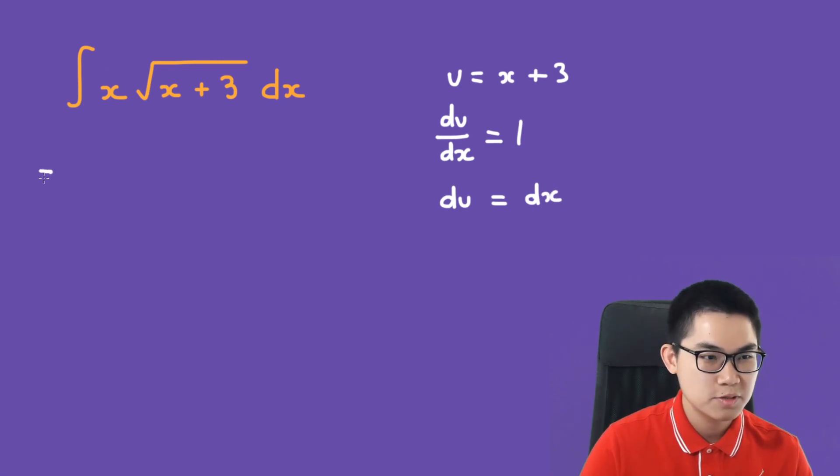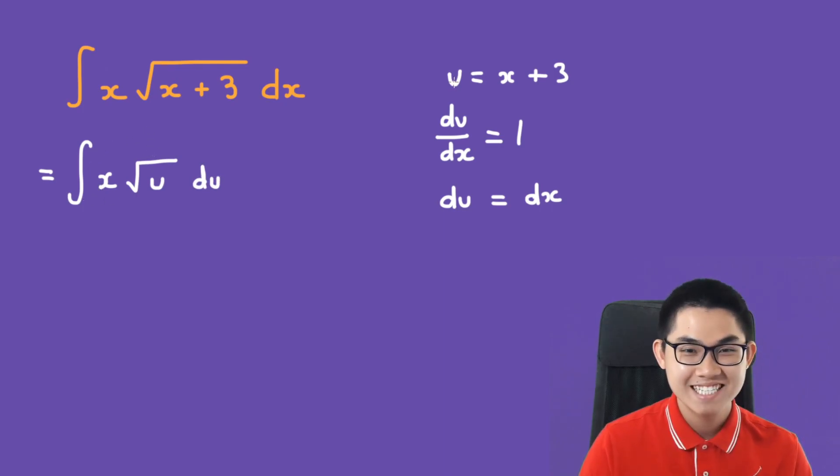Now let's substitute the u. So dx here is du. And what is x going to be? Since u equals x plus 3, then x is u minus 3.